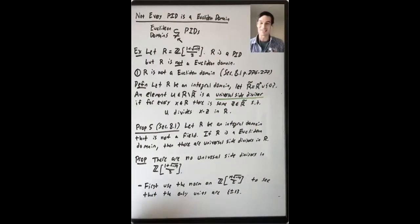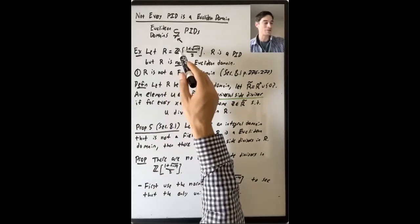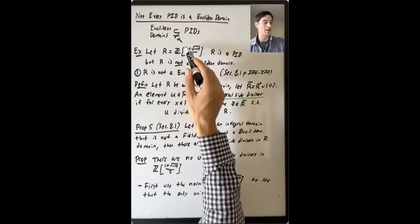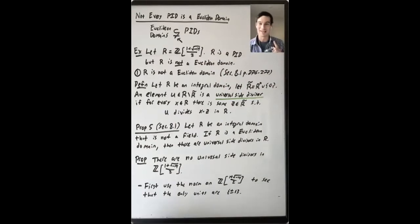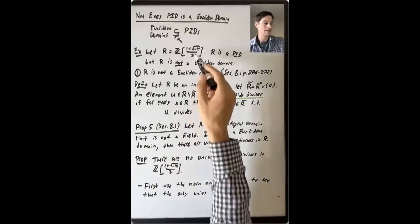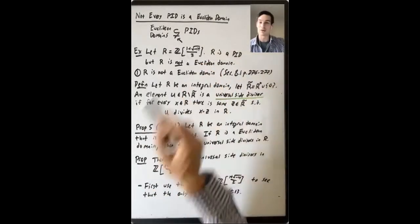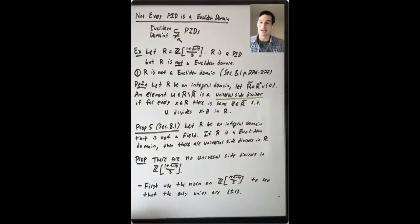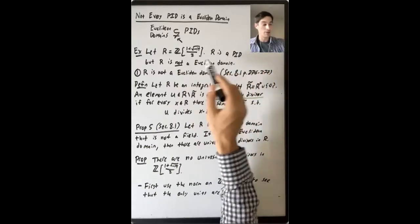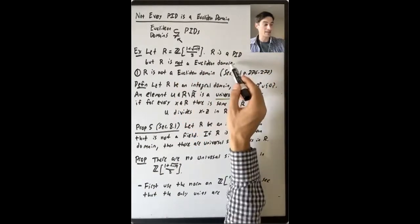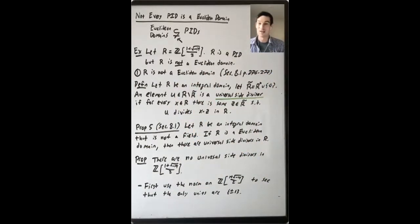The examples are a little tricky to get into, and the stuff that is used to show that this example works are not concepts that will come back later in the 206 sequence. So let's say that R is this ring Z adjoined (1 + √(-19))/2. Note that -19 is congruent to 1 mod 4. This is one of the quadratic rings that we introduced in section 7.1. This ring is a PID, but it is not a Euclidean domain.